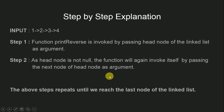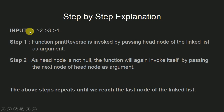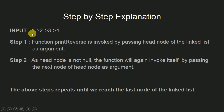Let us now look at a step-by-step explanation of how this pseudo code works. Consider a sample linked list which contains 4 nodes in the order 1, 2, 3, and 4. Currently the head node is pointing to the first node. The function print_reverse is invoked by passing the head node as an argument. It checks whether the head node, i.e. the first node, is null or not. As this node is not null, it invokes itself by passing the next node, i.e. the second node, as an argument.